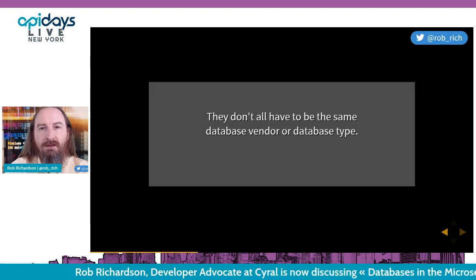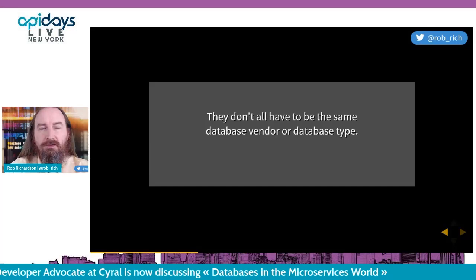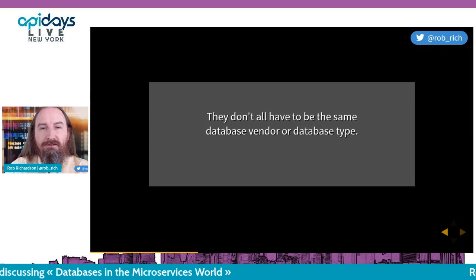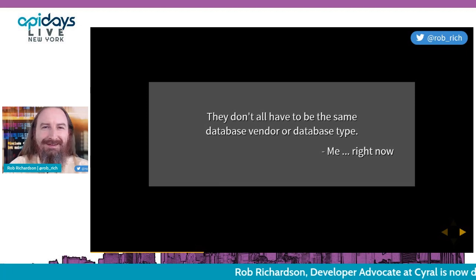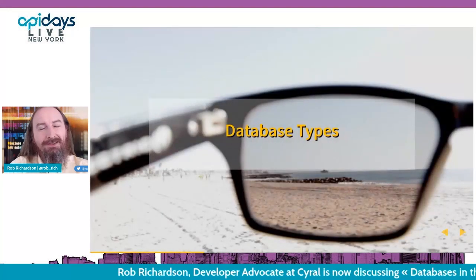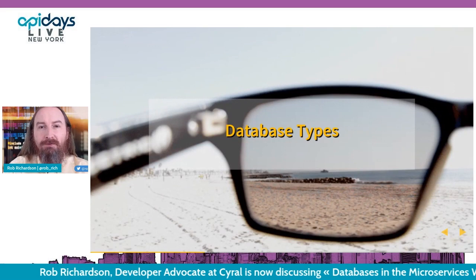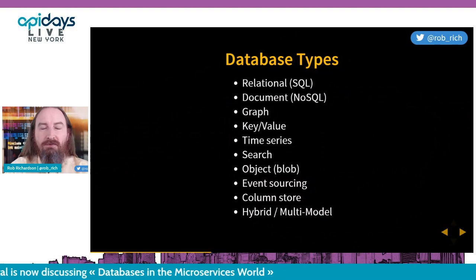What's really interesting is that each of these micro databases can be optimized for the task at hand — they don't all need to be the same type of database. Let's take a look at the different database types available: relational, document, graph, key-value, and we'll look at some other types you may not have heard of, including hybrid and multi-model databases.